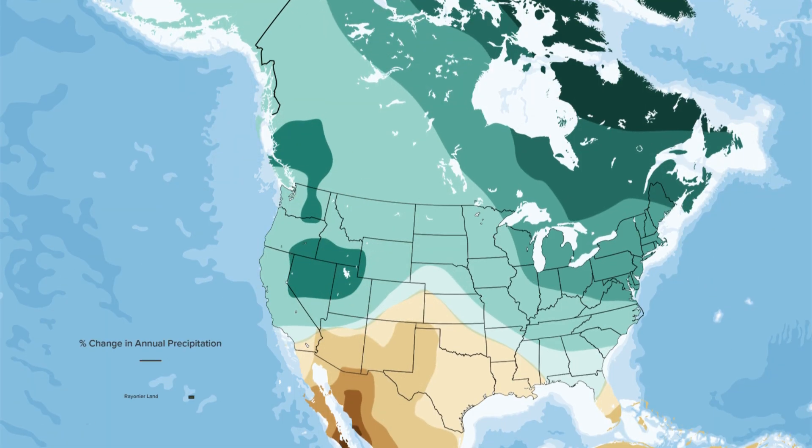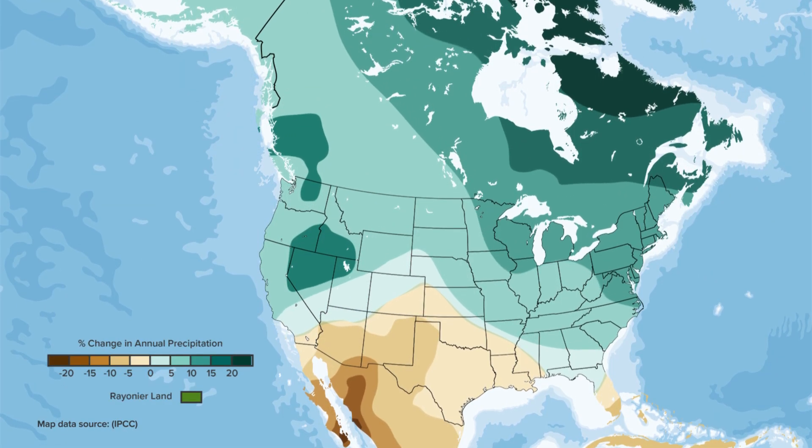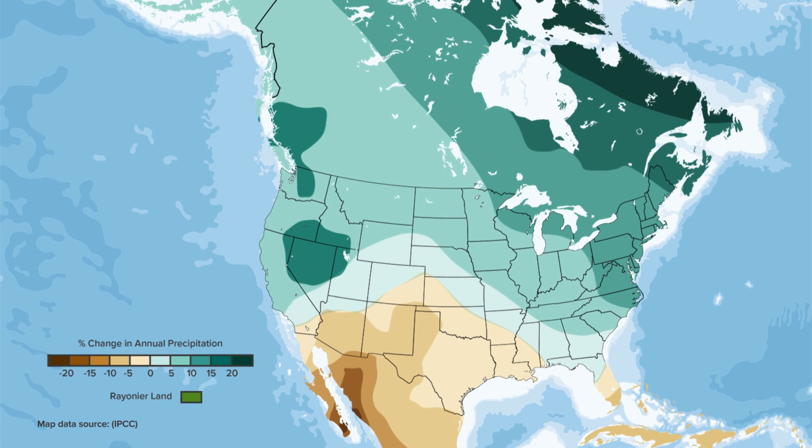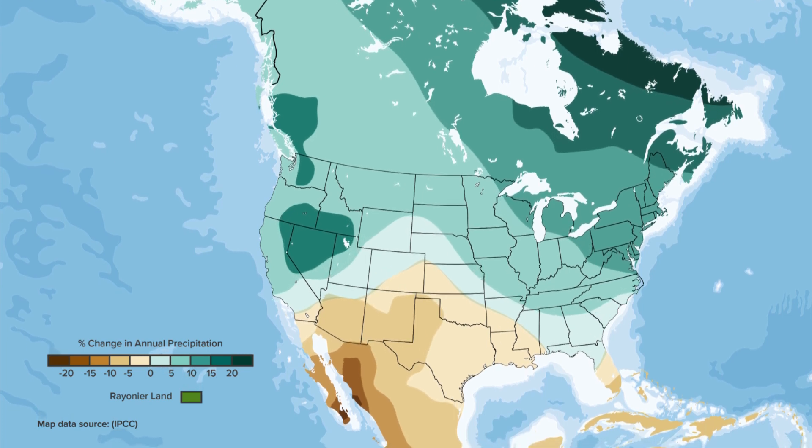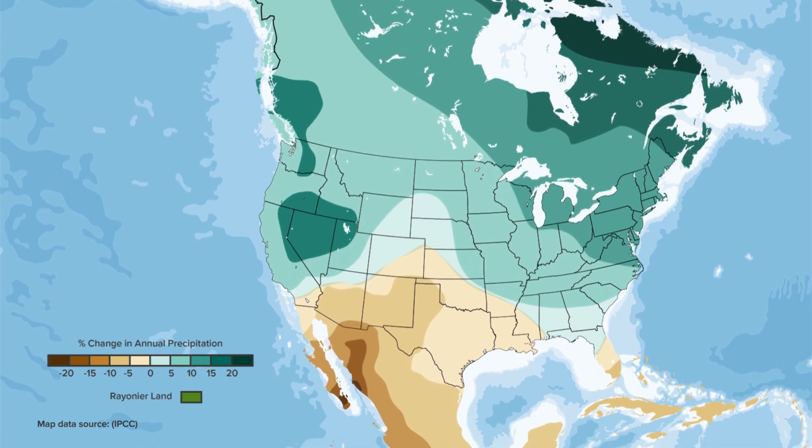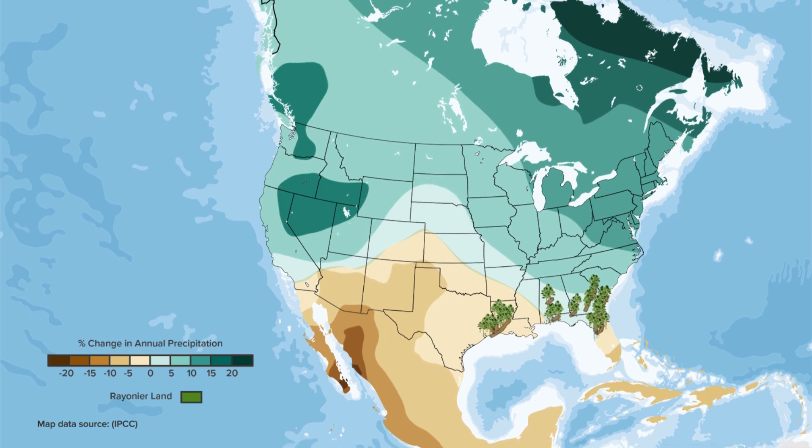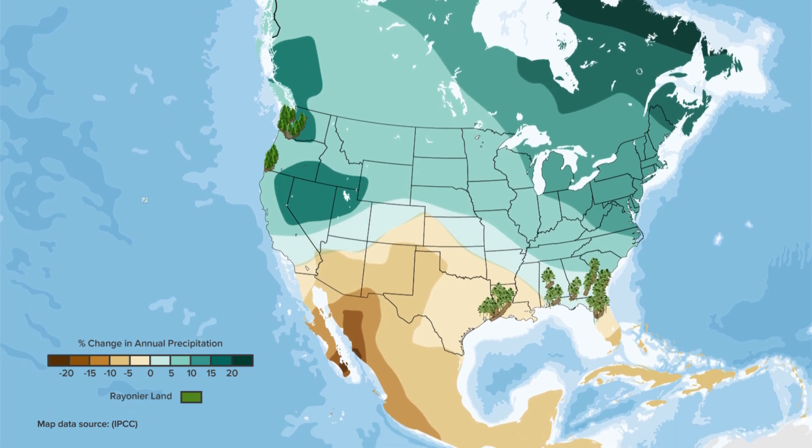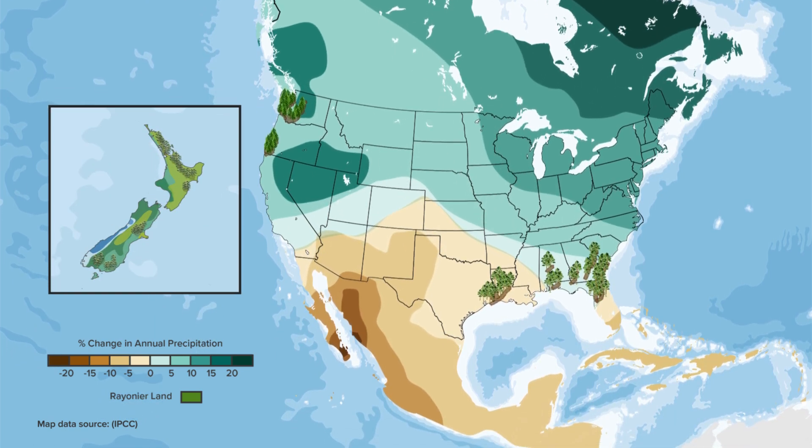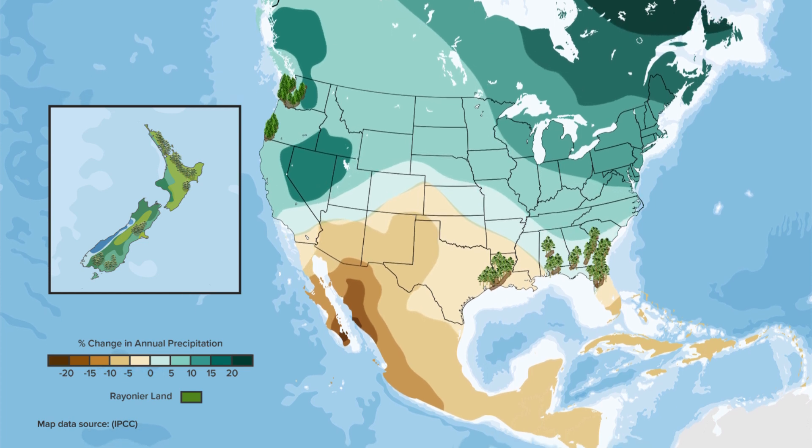Climate change won't impact all regions equally. As shown in this map, Rainier's forests are well positioned in locations expected to have a less severe impact than others, including the U.S. South, Pacific Northwest, and New Zealand. We will continue to invest in lower impact regions.